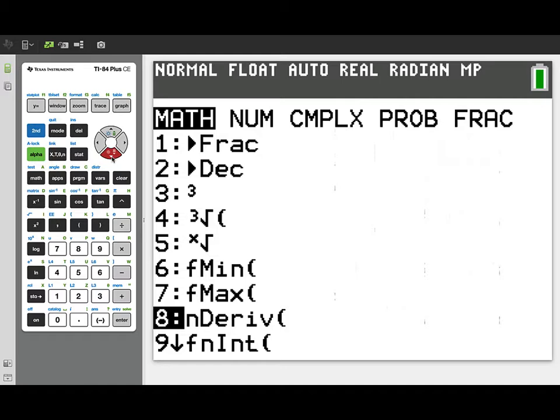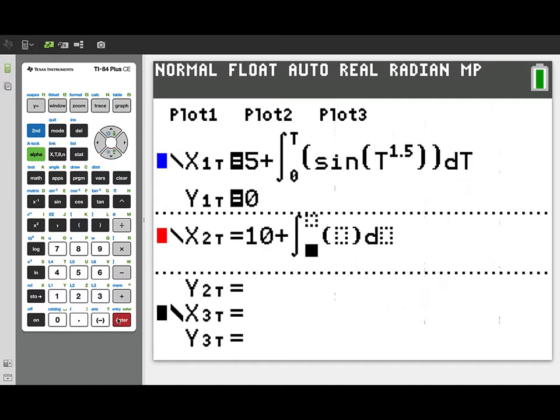And then we're going to integrate from 0 to t the velocity function of particle Q. And that velocity function was the quantity t minus 1.8 times 1.25 raised to the t power.